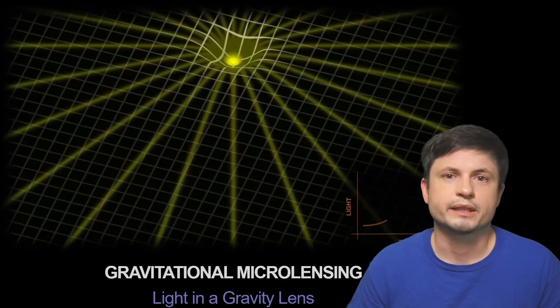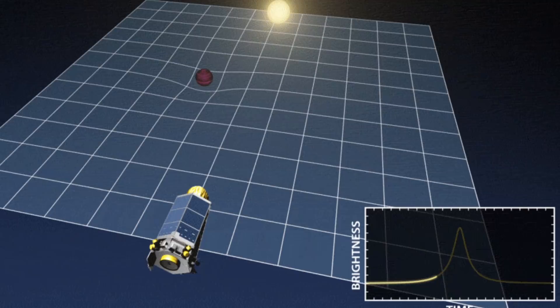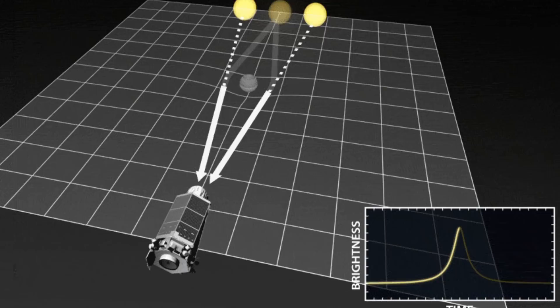In this case, completely by accident, something very briefly passed in front of the quasar. And that something was very likely a small planet that then produced a microlensing effect. The effect that's been used to discover a lot of other planets, usually relatively close to the center of the galaxy.